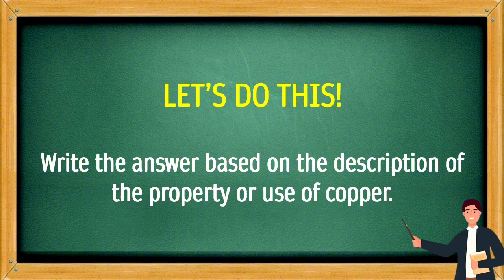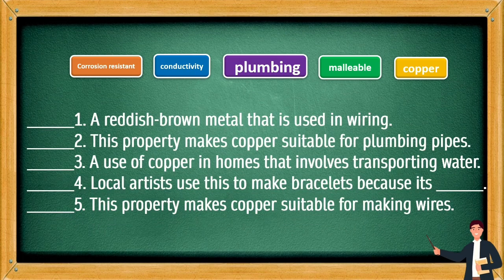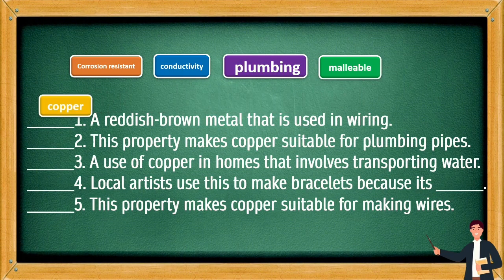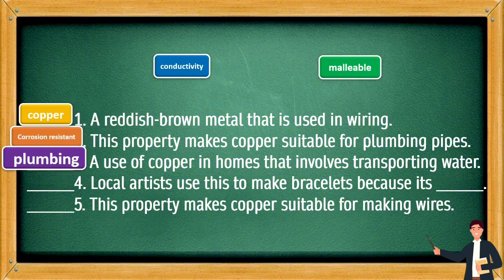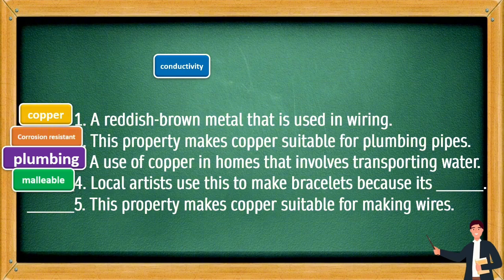Let's do this! Write the answer based on the description of the property or use of copper. A reddish-brown metal that is used in wiring — this is copper. This property makes copper suitable for plumbing pipes — this is corrosion resistant. A use of copper in homes that involves transporting water — this is plumbing. Local artists use copper to make bracelets because it's malleable. This property makes copper suitable for making wires — this is conductivity.